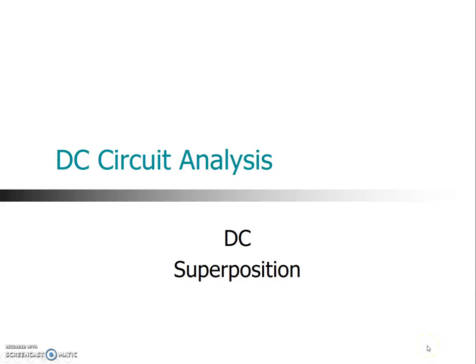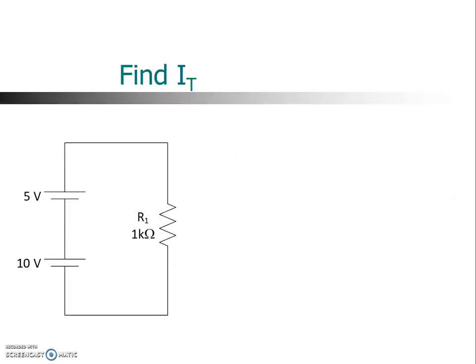In this video, we're going to consider using the superposition theorem in DC circuit analysis. We're going to start out with this circuit, a fairly simple, trivial circuit. We have two supplies, a 5-volt supply and a 10-volt supply. They're connected series aiding.